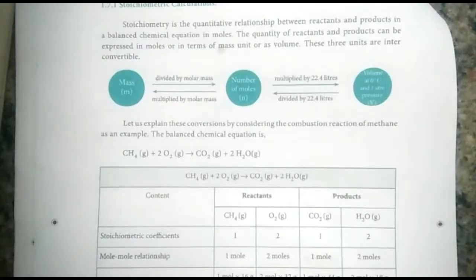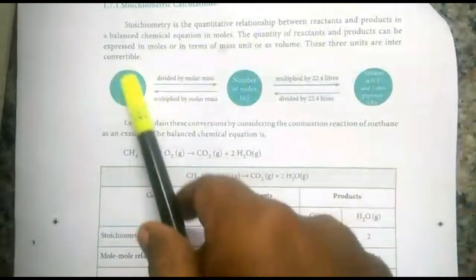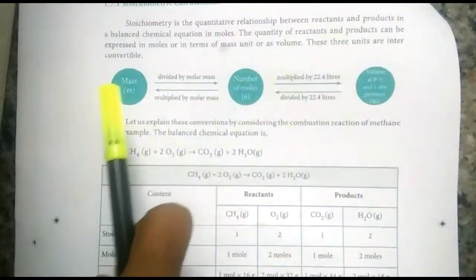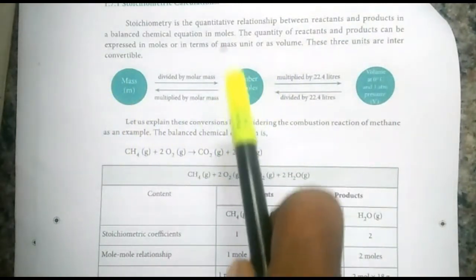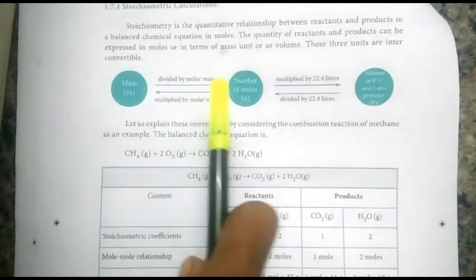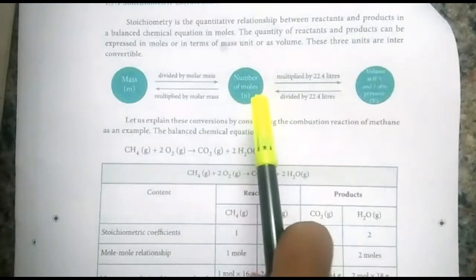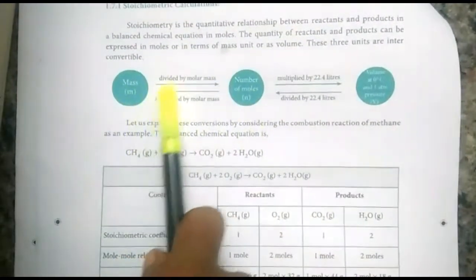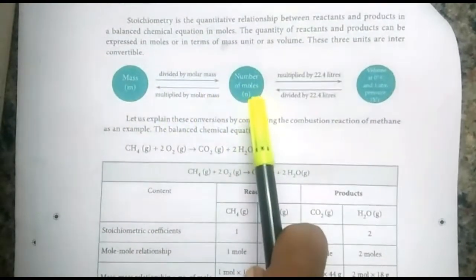The stoichiometric proportions also give a relationship between a reactant as well as a product. These formulas are very important for doing sums in exams. Sometimes they give a mass and ask for the number of moles. At that time, mass divided by molar mass gives the number of moles.